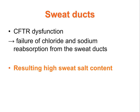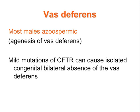In the sweat glands, high sweat salt content is seen due to failure of chloride and sodium reabsorption from the sweat ducts. The vas deferens are affected in males, with most males being azoospermic due to agenesis of the vas deferens. Mild mutations of CFTR can cause isolated congenital bilateral absence of the vas deferens.